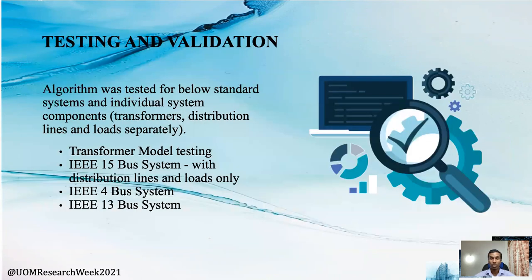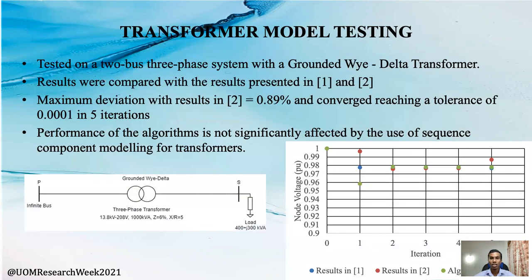I will take you through the attempts we made to test and validate our algorithm. A separate test was done to assess the validity of the transformer model. According to the test results, the algorithm converged reaching a tolerance of 0.0001 in five iterations. The maximum deviation observed compared to the reference paper is 0.89%, suggesting the algorithm's performance is not significantly affected by the use of sequence component modeling for transformers.